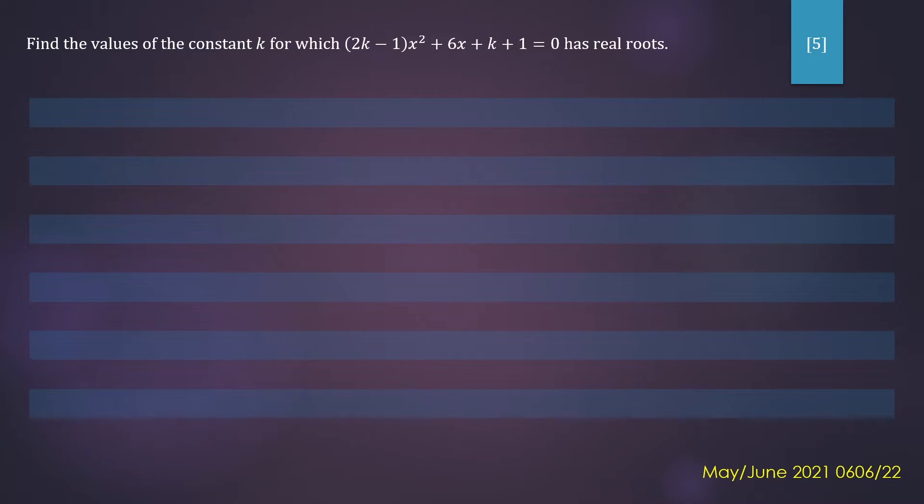We can use the discriminant to solve this problem. The key word is real roots. If we are looking for real roots, it means we can have either one root or two roots, which means that your discriminant is either equal to 0 or greater than 0.